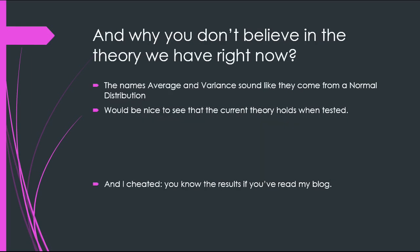Why don't I believe the commonly held theory? First, the names 'average' and 'variance' sound like they come from a normal distribution — a bell curve. This is something I've been studying recently in quality control as part of my mechanical engineering degree; one of the things you must know in quality control is how a normal distribution looks. And I want to see if the theory that the maximum value is average plus variance actually holds when you put it to the test. I'll admit I'm a bit of a cheat, because I've already done this before — if you read the blog, you know what's coming.